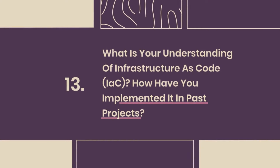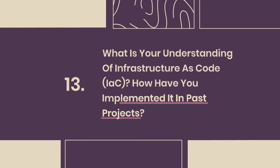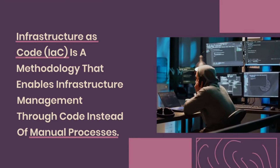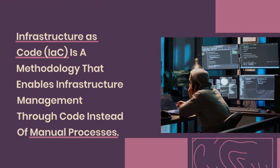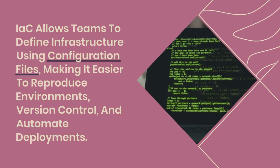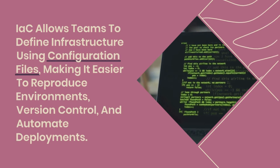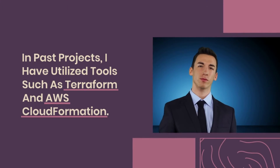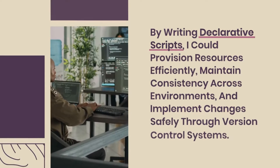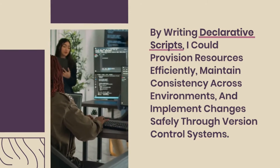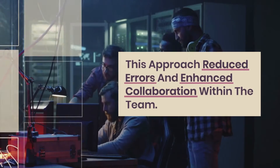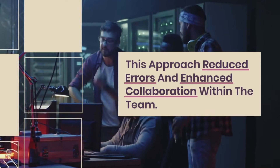Question 13: What is your understanding of Infrastructure as Code (IAC)? How have you implemented it in past projects? Infrastructure as Code (IAC) is a methodology that enables infrastructure management through code instead of manual processes. IAC allows teams to define infrastructure using configuration files, making it easier to reproduce environments, version control, and automate deployments. In past projects, I have utilized tools such as Terraform and AWS CloudFormation. By writing declarative scripts, I could provision resources efficiently, maintain consistency across environments, and implement changes safely through version control systems. This approach reduced errors and enhanced collaboration within the team.